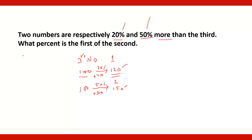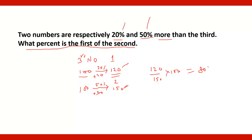We have to find what percent the first number is of the second. Divide 120 by 150 and multiply by 100. 120 divided by 150 multiplied by 100 gives 80 percent. So the first number is 80 percent of the second.